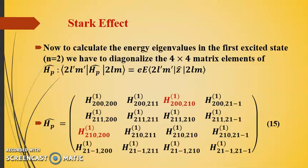We need here some more specific explanation. First we have to consider this thing that this z does not depend on azimuthal angle phi because this z equals to r cos theta. It only depends on r and theta. Therefore these elements 2l'm' and 2lm are non-zero only if m' equals m.